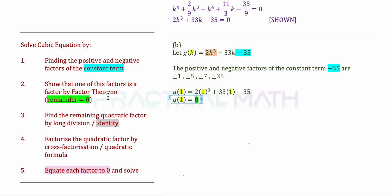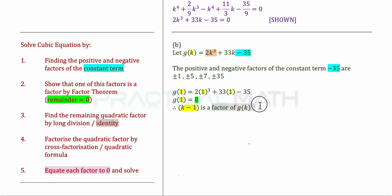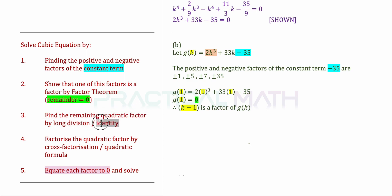When the remainder is 0, that means k minus 1 is a factor of g of k, because setting k minus 1 equal to 0 gives k equals 1, which has a remainder of 0. Once we are done with step 2, we can then proceed to step 3 by finding the remaining quadratic factor, using either long division or the identity method.